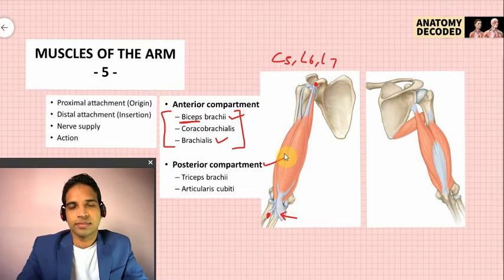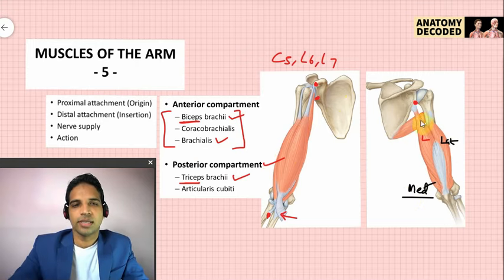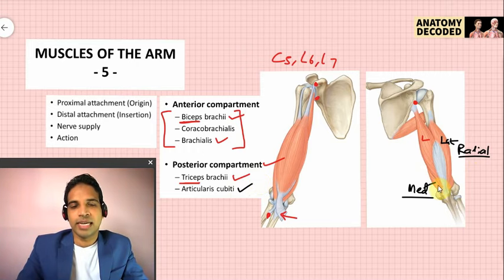Triceps brachii is the chief muscle of the posterior compartment. It has three heads: the long head from the infraglenoid tubercle, the lateral head, and the medial head. Distal attachment is the olecranon process of the ulna. Nerve supply is the radial nerve, root value C5, C6, C7, C8, and T1. Action is extension at the elbow joint. Anconeus is considered a detached part of triceps brachii, present deep to the medial head, and helps in pulling the capsule of the elbow joint.